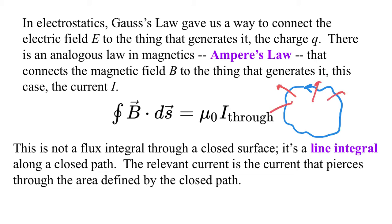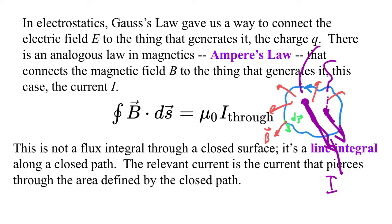We construct a mental thing, just like a Gaussian surface — we now have an Amperean circuit, or loop. We figure out the magnetic field going through this thing. We break up the path into a whole bunch of little steps, dS, each being a tiny length in the direction tangent to the loop. We pick a direction, go around that loop, figure out the magnetic field at each point, and take the dot product.